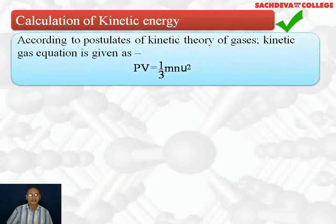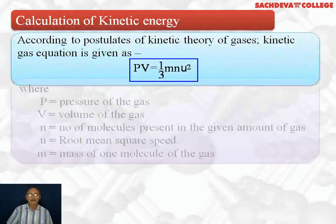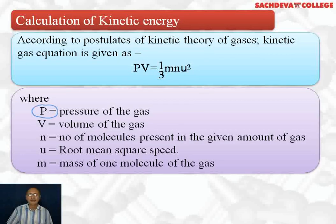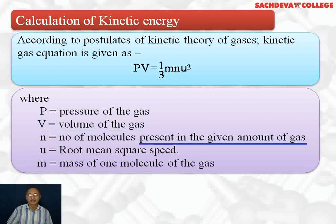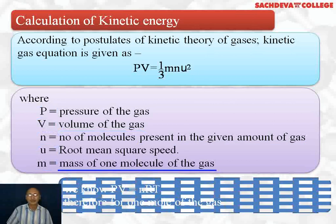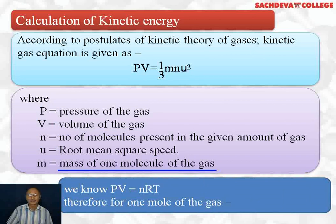For the calculation of kinetic energy, according to postulates of kinetic theory of gases, the kinetic gas equation is given by PV = (1/3) M N U², where P is pressure of the gas, V is volume of the gas, N is number of molecules present in the given amount of gas, U is root mean square velocity, and M is mass of one molecule of the gas.